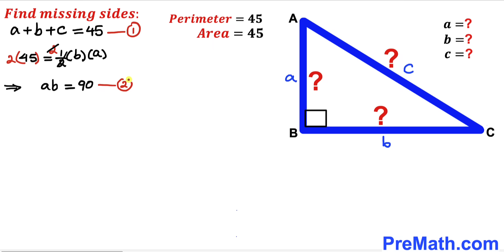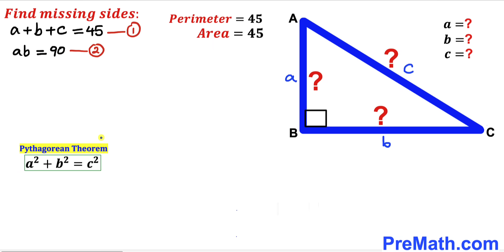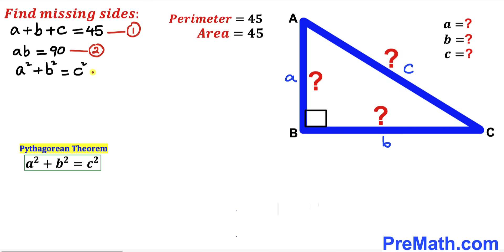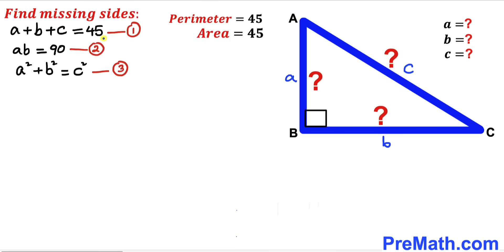Finally, let's recall the Pythagorean theorem since we are dealing with right triangle ABC. The Pythagorean theorem gives us a² plus b² equals c². I'm going to label this as equation number 3. Now we have three equations and we are going to solve this system for a, b, and c.